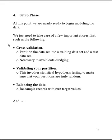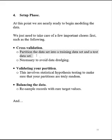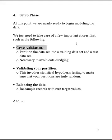First we've got to do our cross validation. Cross validation is how data science proceeds — we're going to partition the data set into a training data set and a test data set. This is necessary to avoid data dredging. People say, oh you're data mining, that means data dredging. Well, this is how we avoid data dredging: by performing cross validation and making sure that whatever we come up with in our training data set is similar to what we come up with in our test data set, so it can't be data dredging.